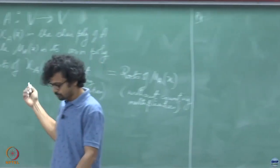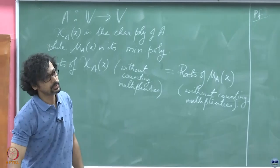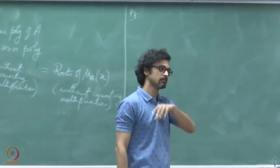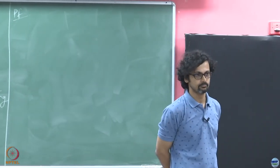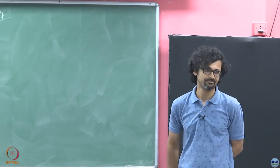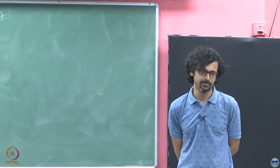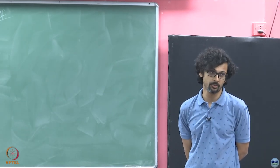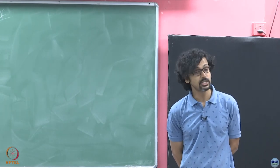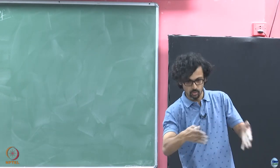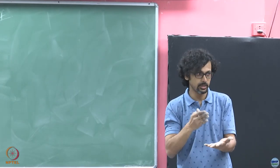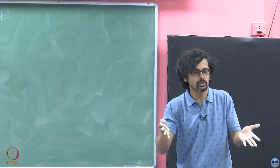Now it's time to try and prove this result. We do not know that about the degree of the minimal polynomial. As we saw with the vector e₂, you did not have to go up to the third stage. You just hit it with I, then you hit it with A and you lost linear independence.